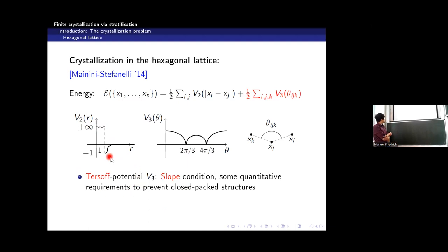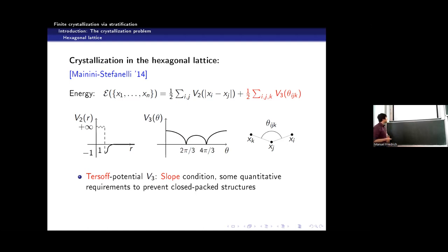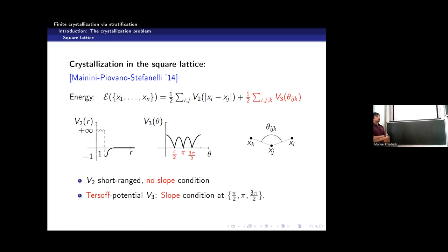They work with a potential that is quadratic around the minimum, suggesting elasticity, but the potential has a kink — it is not differentiable at the minimum — so it is not truly elastic. I will explain later why this assumption is needed. You can also take a tertiary potential favoring multiples of π/2, and then you can expect the square lattice to be optimal.